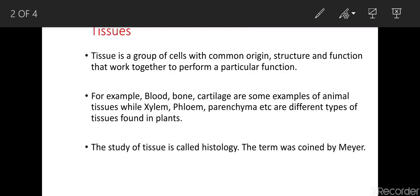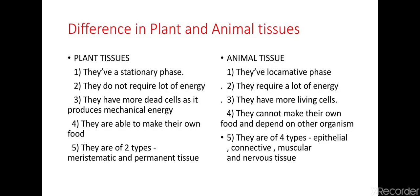The term histology was first coined by Mayer. Now, do plants and animals have the same type of tissues? The answer is no — they do not have the same type of tissues. Though plants and animals have similar types of processes, due to differences in their organization, lifestyle, and mode of living, they do not have a similar type of tissue. Let us look at how plant and animal tissues differ from each other.